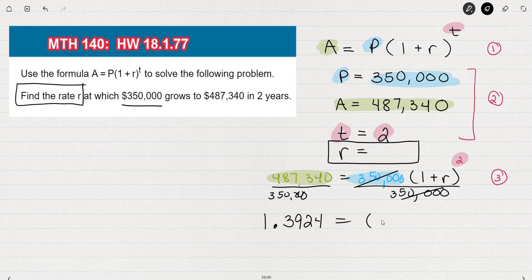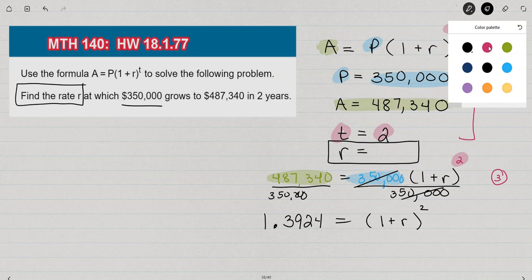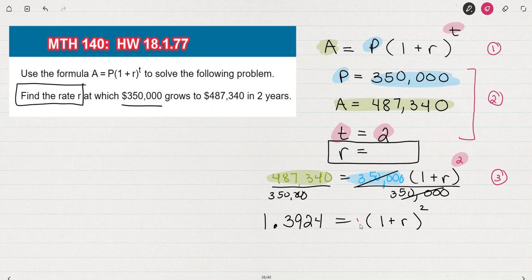equals this 1 plus the interest rate squared. And here's how we solve this quadratic equation from this point. Since we have this binomial squared, we have this 1 plus the interest rate, R, squared. We can use the square root property to take the square root of both sides.